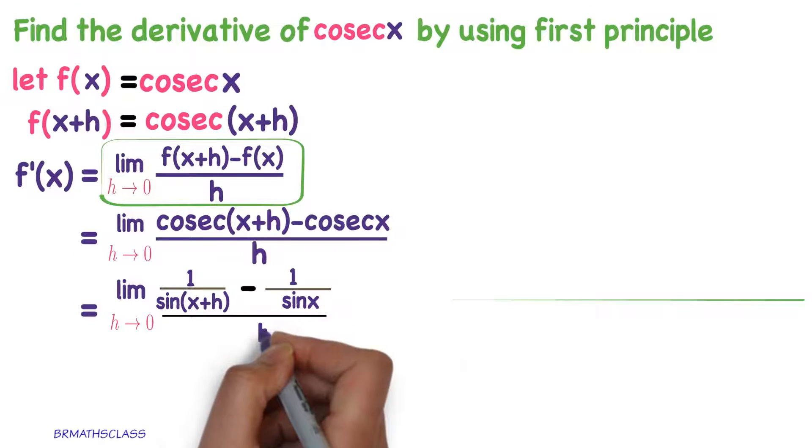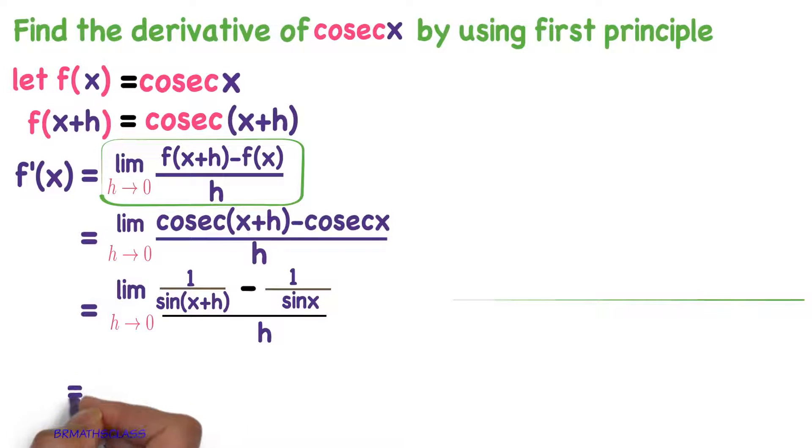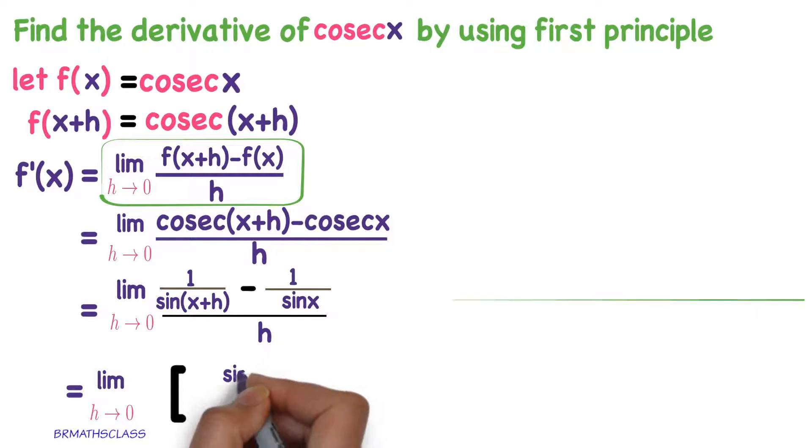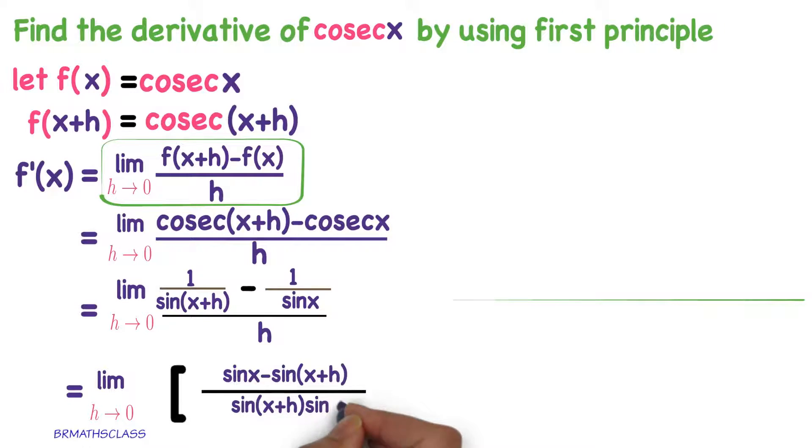Now, you observe the numerator. Take the LCM sin x plus h into sin x. What you will get in the numerator? sin x minus sin x plus h divided by what is LCM? sin x plus h into sin x, whole divided by h. I am writing here it as 1 divided by h.